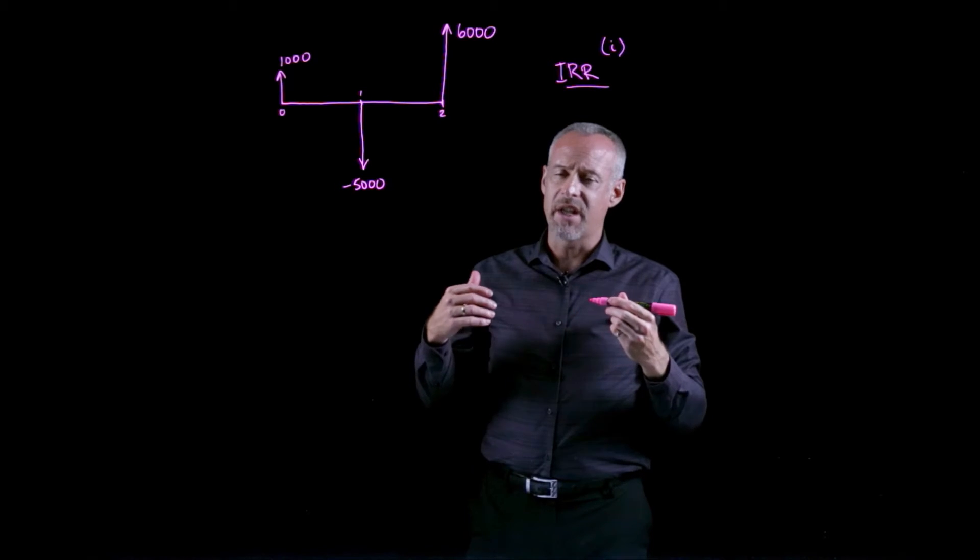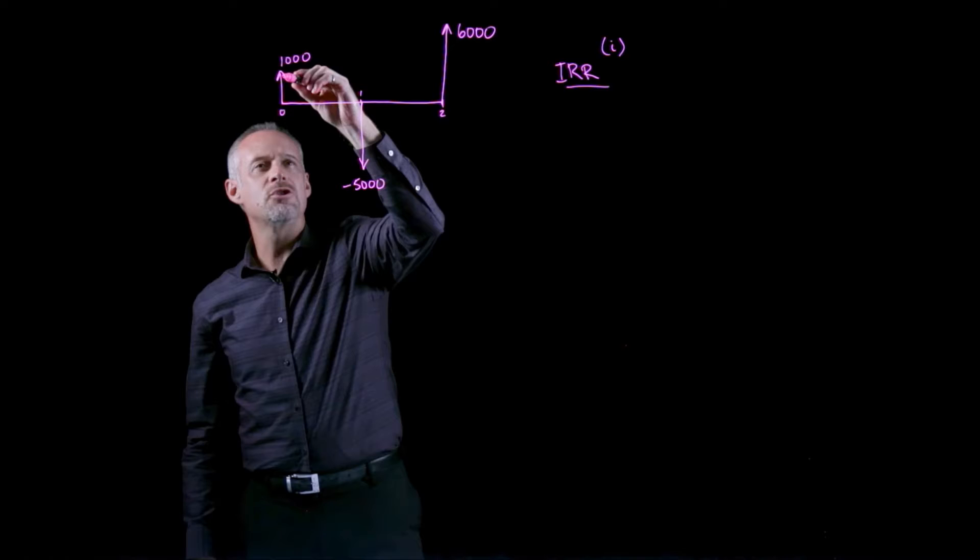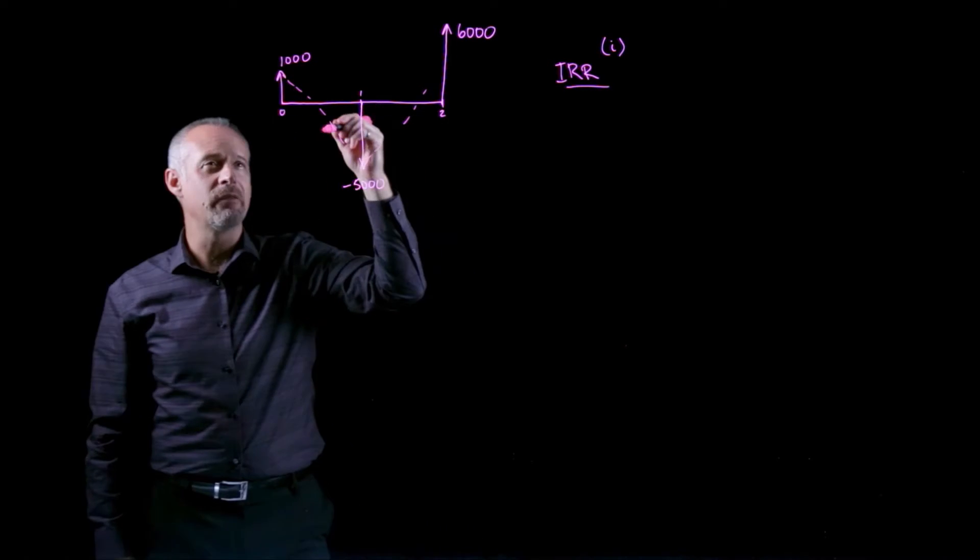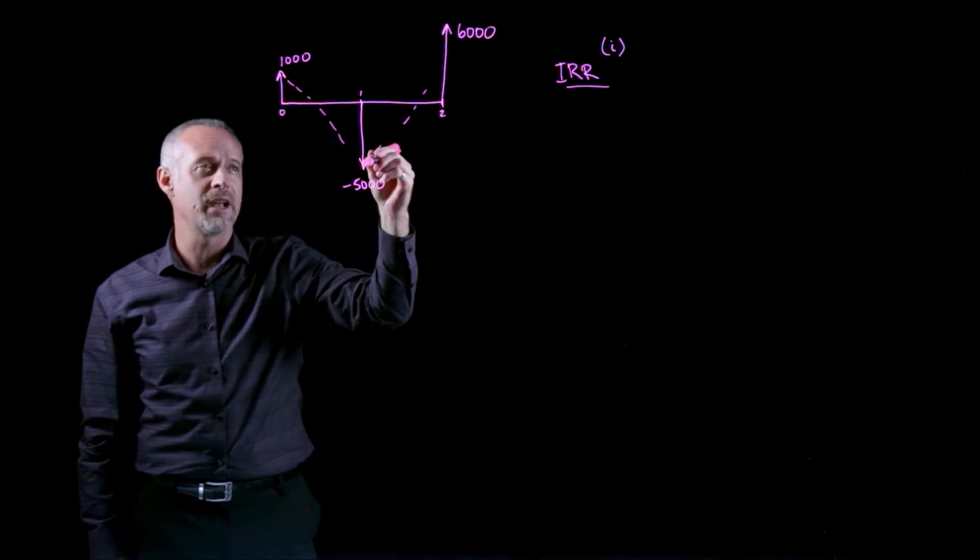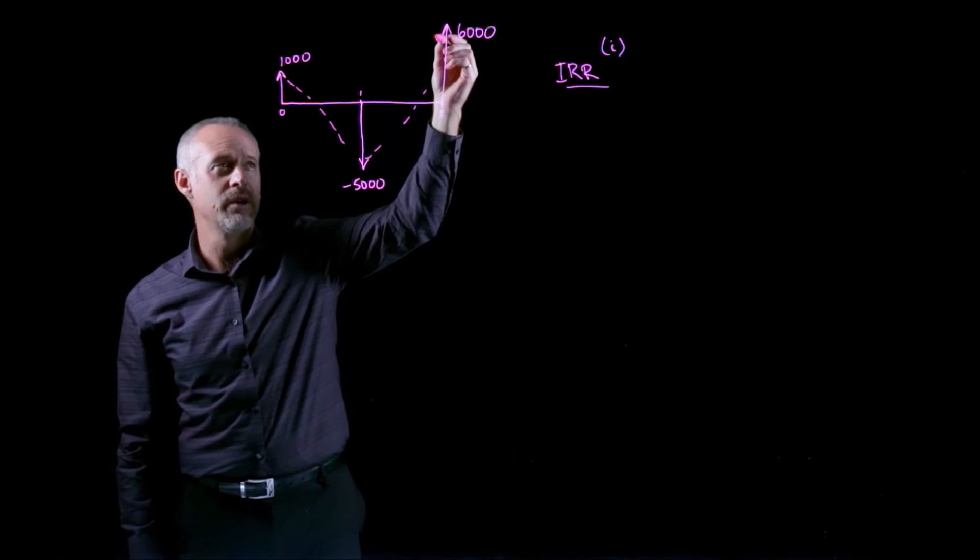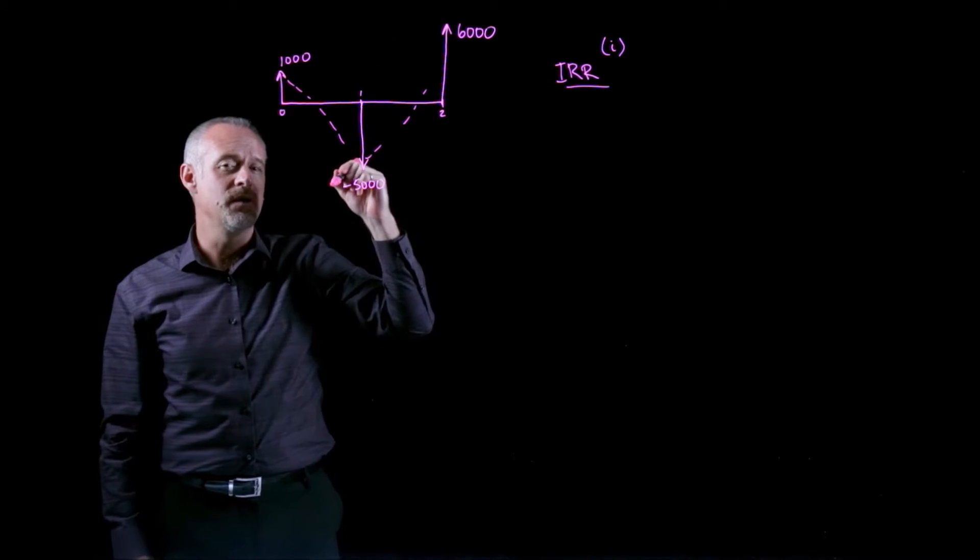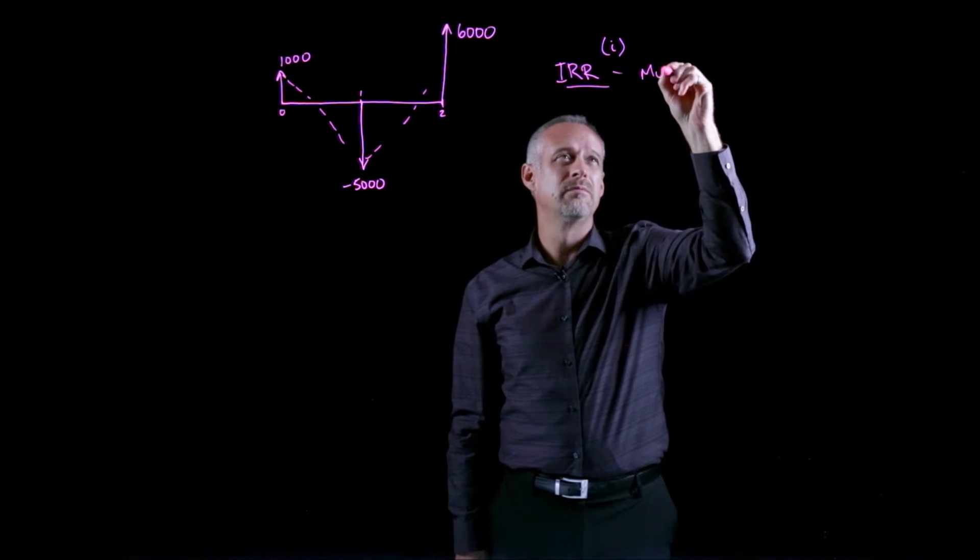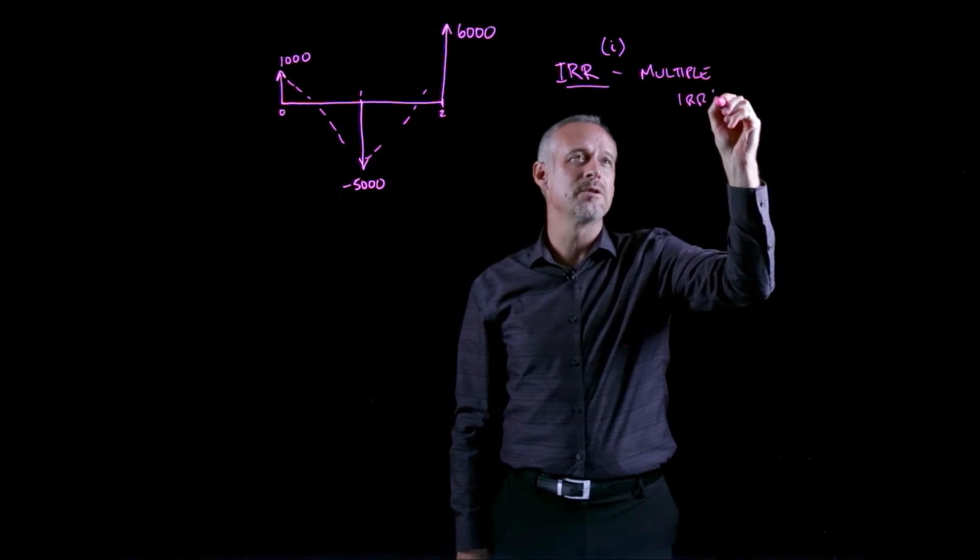However, in problems where the cash flow diagram has more than one change in sign, meaning a switch between positive and negative cash flows, it suggests that we may have multiple IRRs.